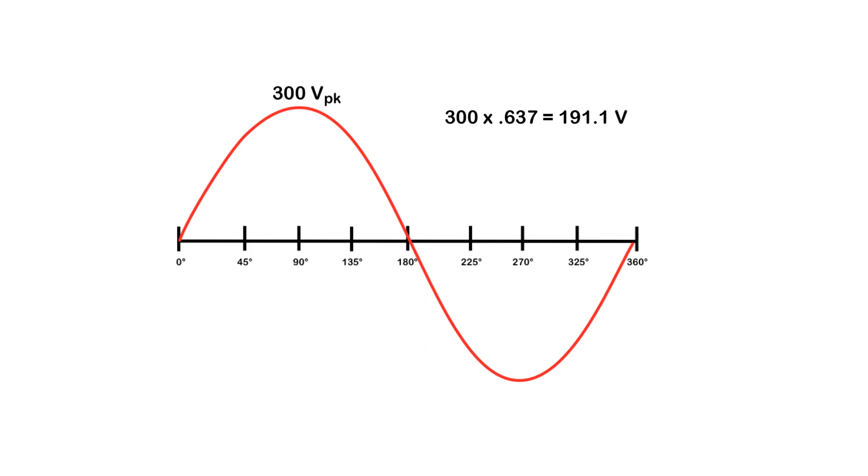But also, DC meters read average. So if you hook up an AC sine wave to a DC meter and put it into volts, it's going to read 0. So that's important for us to know as well.